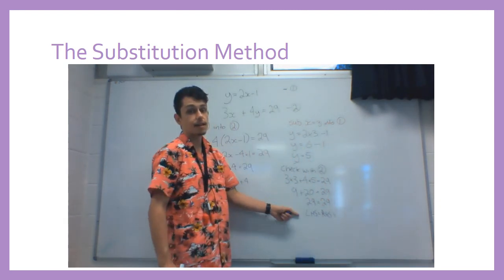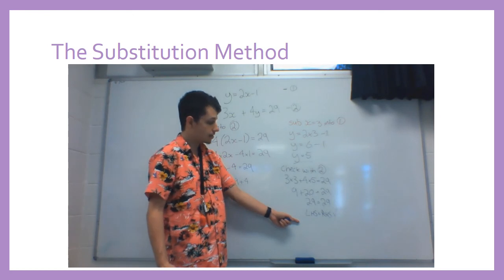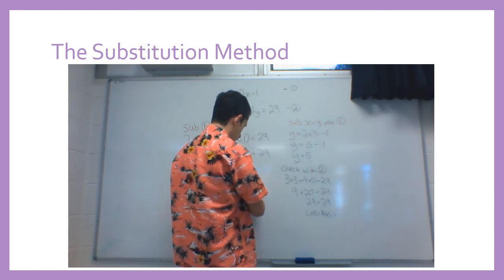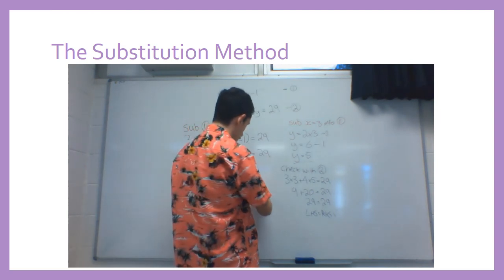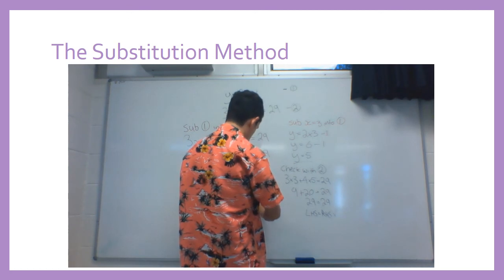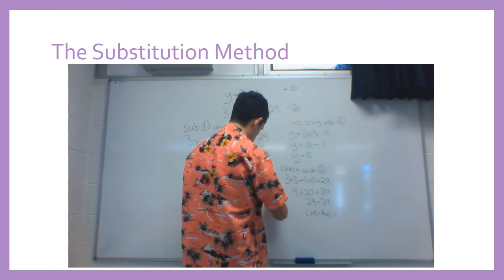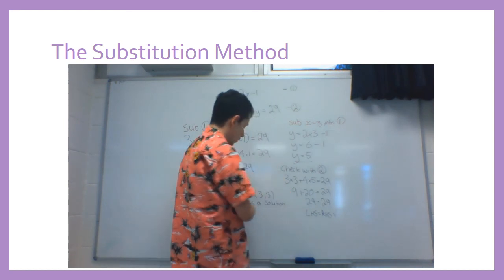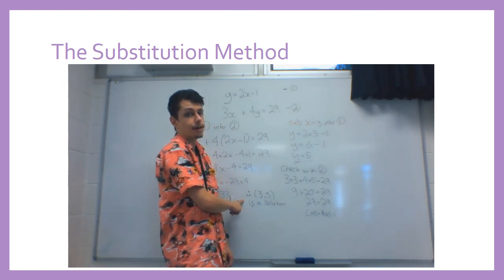So as you can see, it works out. My left-hand side is equal to my right-hand side. So I'm just going to state my answer in the middle here: 3 comma 5 is a solution.